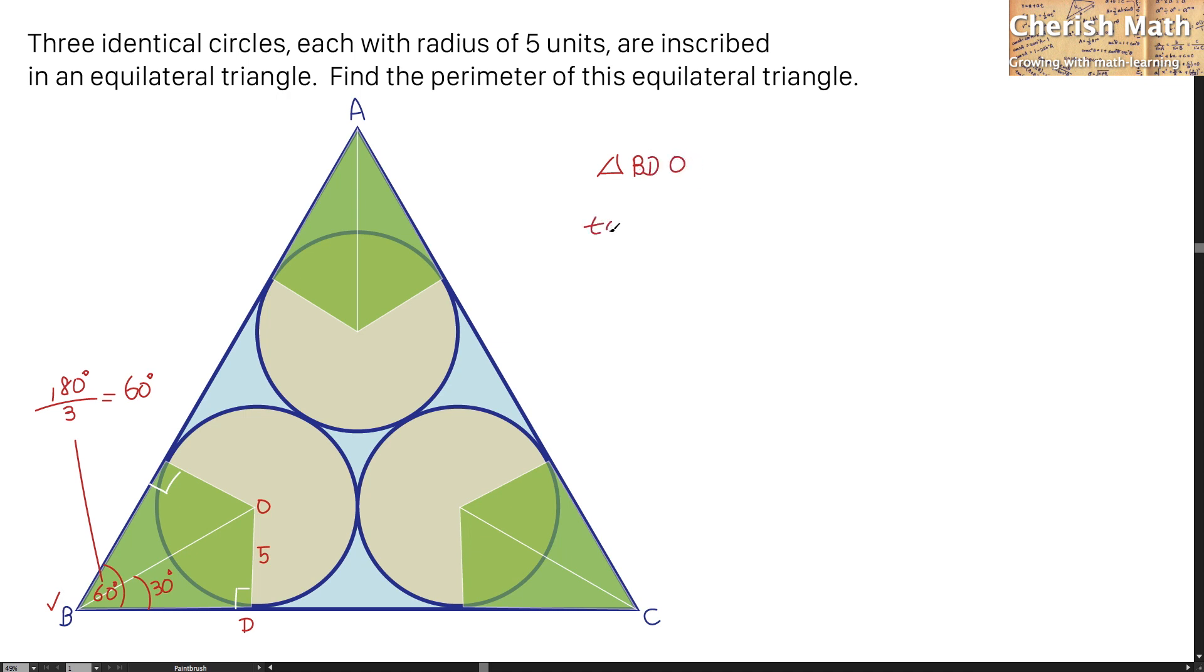I can use trigonometric tangent 30 degrees is equal 5 divided by BD. And the value of BD that I am going to get is by using 5 divided by tan 30 degrees. Further working on it, BD is 5 divided by 1 over square root of 3. So the length of BD is now 5 square root of 3.